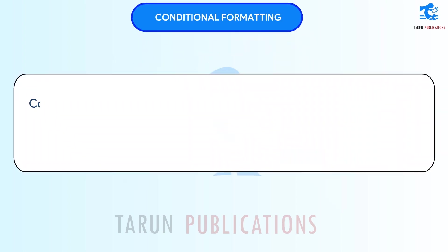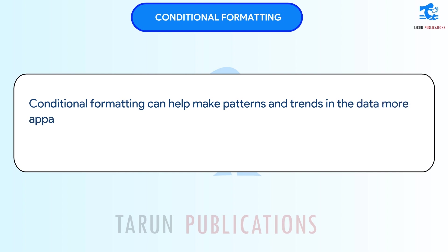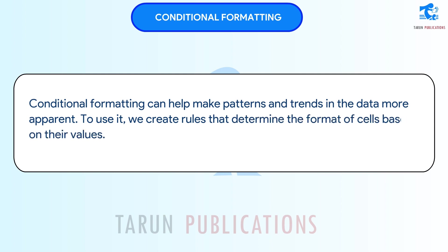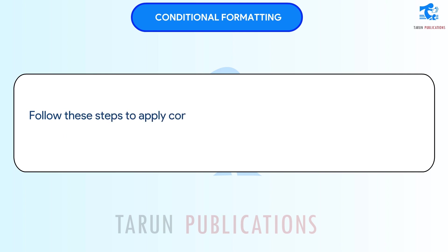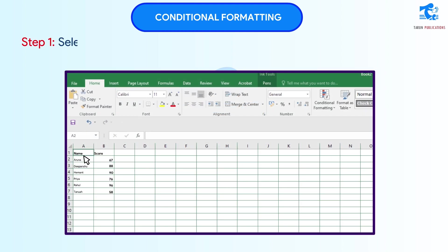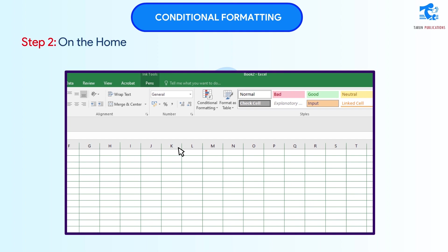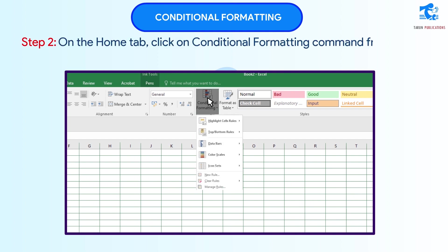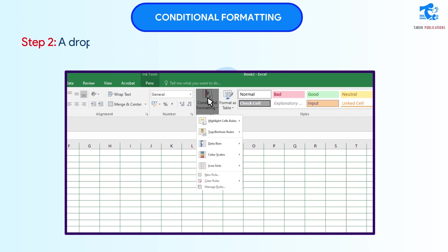Conditional Formatting. Conditional formatting can help make patterns and trends in the data more apparent. To use it, we create rules that determine the format of cells based on their values. Follow these steps to apply conditional formatting to any data series in Excel. Step 1: Select a range of cells to format. Step 2: On the Home tab, click on the Conditional Formatting command from the Styles group. A drop-down menu will appear.